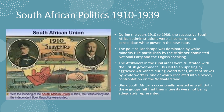The Union officially came into being in 1910, with interest centered around the white population. During the years 1910 to 1939, successive South African administrations all sought to consolidate white power in the new state. The political landscape was dominated by white minority rule, particularly by the Afrikaner-dominated National Party and the English-speaking population. Afrikaners in the rural areas were frustrated with the British government, leading to an uprising during World War One and militant strikes by white workers, one of which escalated into a bloody confrontation on the Witwatersrand.